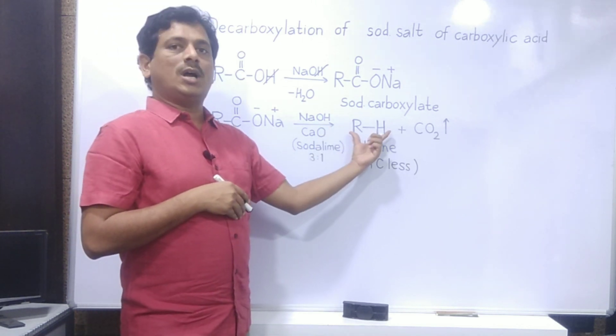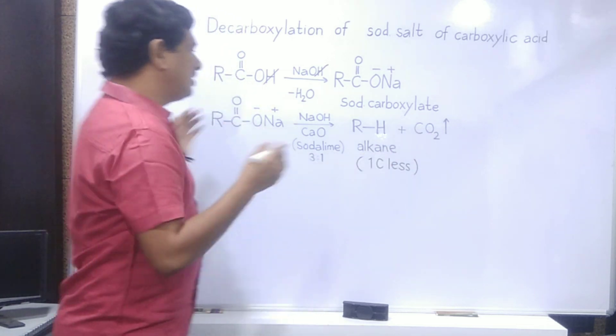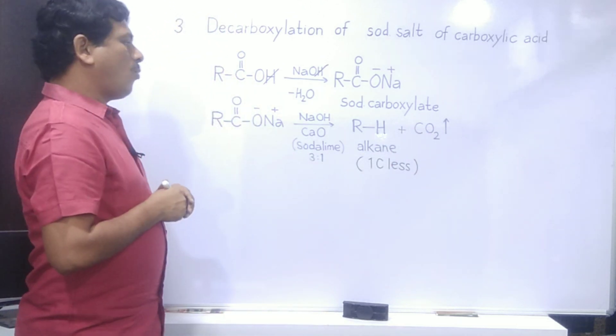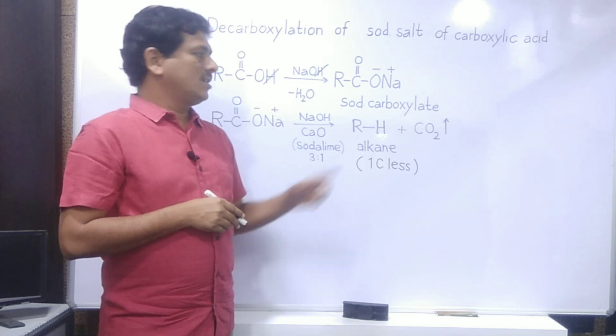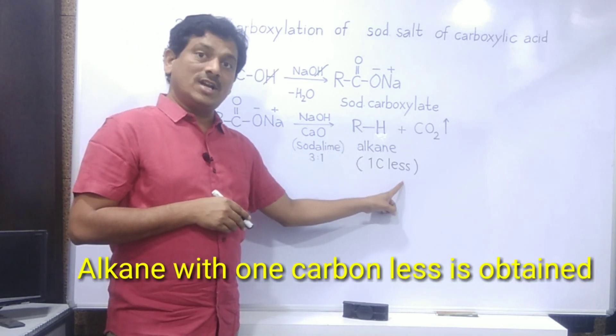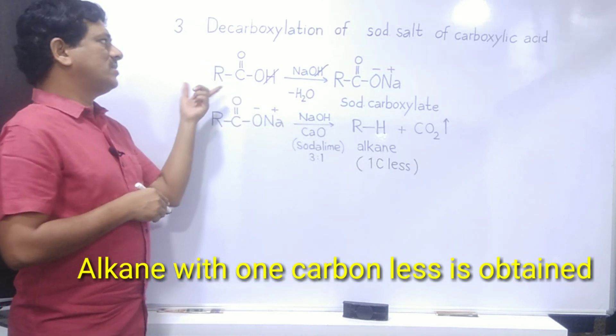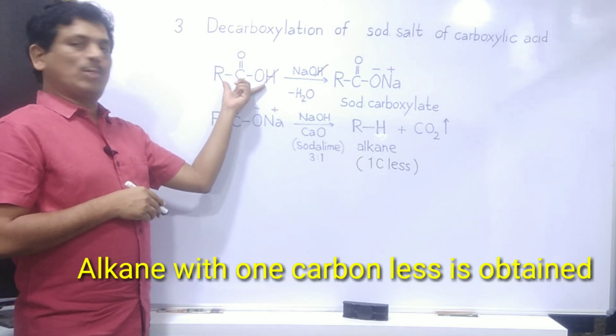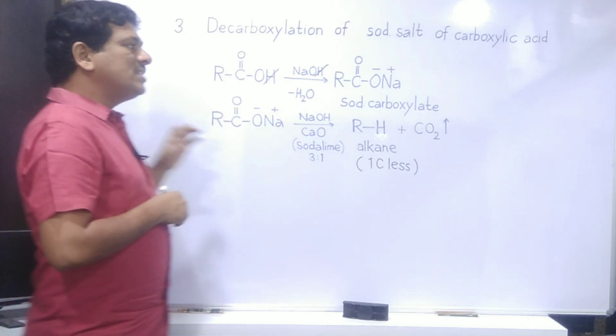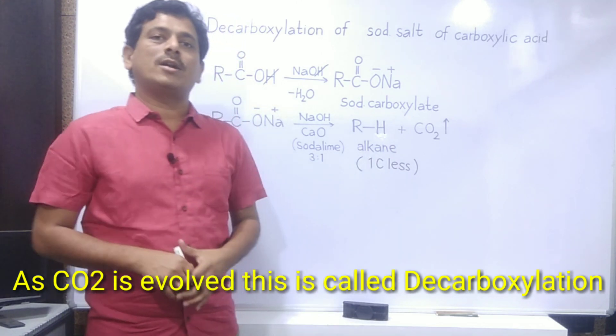Then what happens here is an alkane is formed and CO2 is lost during this course of reaction. What is happening here is the alkane formed has one carbon less than the carbons present in the sodium salt, or you may say carbons present in the carboxylic acid. Now this reaction, since there is evolution of carbon dioxide, it is also called decarboxylation.